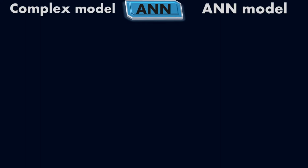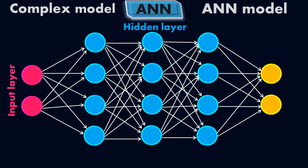Now let's go for a complex artificial neural network model. So far we saw a simple artificial neural network model, and now we are going to go for the complex model. Let me draw the artificial neural network model. This is my input layer, this is the hidden layer, and here is the output layer. It is a bit complex compared to the previous model.